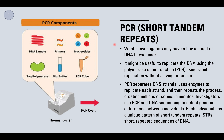Investigators use PCR and DNA sequencing to detect genetic differences between individuals. Each individual has a unique pattern of short tandem repeats, or STRs — short repeated sequences of DNA — which is how we distinguish individuals. The PCR components include a sample of DNA, primers, nucleotides (A, T, G, and C), TAC polymerase, a buffer, and a PCR tube. All of these exist within the PCR tube and go through a thermocycler. A PCR can make millions of copies of a small DNA sample on a tabletop machine in just a couple of hours.